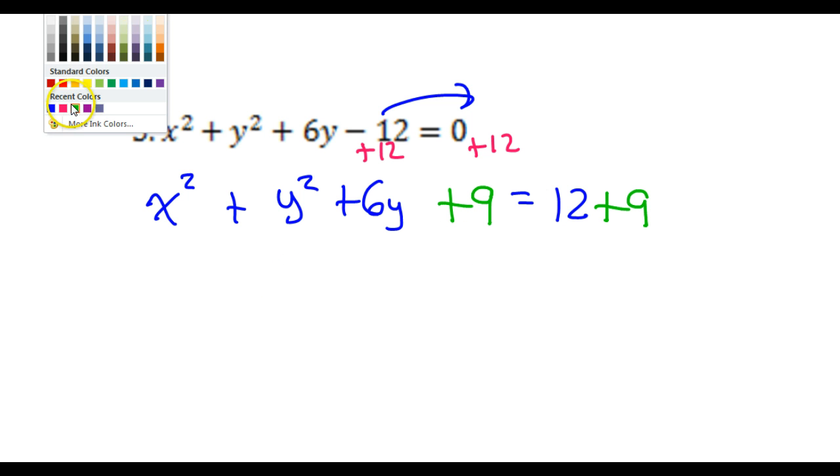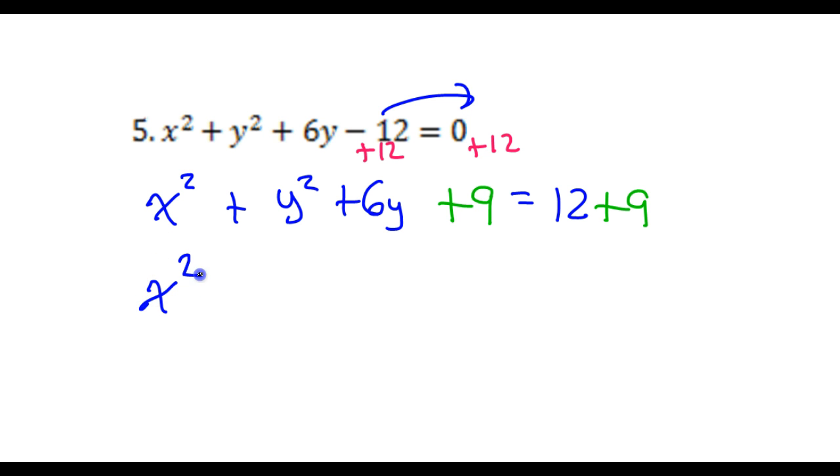Okay. There's nothing I can do with the x squared. All right. It's only one thing. So I'm just going to leave that x squared. But the y's will factor as the same thing twice, y plus 3. And that's going to equal 21.